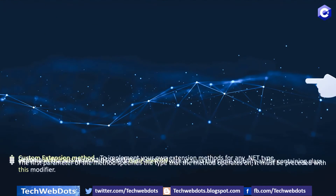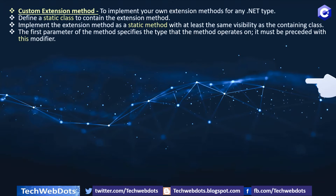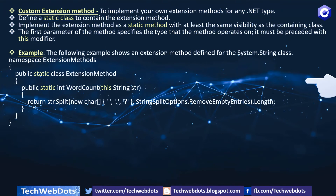Now let's discuss how we can work with custom methods, or your own defined extension methods. To implement your own extension methods for any .NET type, define a static class to contain the extension method. The class will be static. Implement the extension method as a static method with at least the same visibility as the containing class — so two important things: the class will be static, and the method it contains will also be static and public. The third important point is the first parameter of the method specifies the type that the method operates on, and it must be preceded with the 'this' modifier.